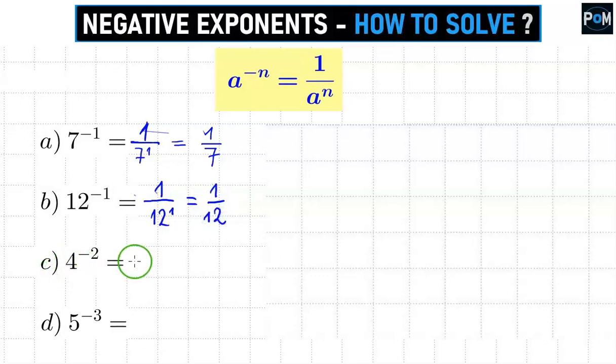In example c, it will be similar. We have 4 to the power of negative 2, so we also draw a fraction bar. According to the formula, at the top, we put 1, and at the bottom, we put what was here, but without the minus. So it will be 4 to the second power. And here, we still need to calculate 4 squared, which is 16.